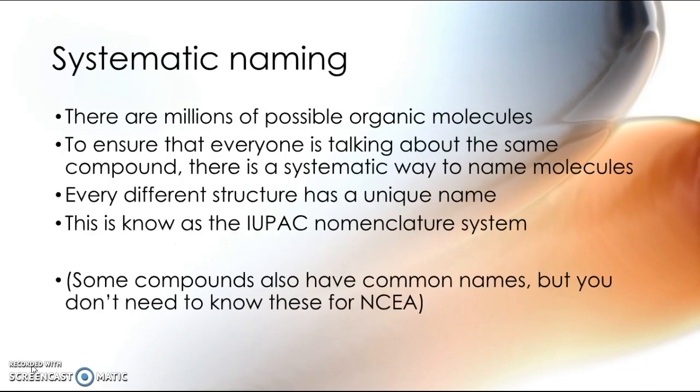Because there are so many possible organic molecules and so many possible combinations, we need to be able to name things in a unique way. So that if I'm talking about a molecule, if you're talking about a molecule, if a chemist in Japan or in Russia or in Namibia is talking about a molecule, we are all talking about the same molecule. So we use this nomenclature system.